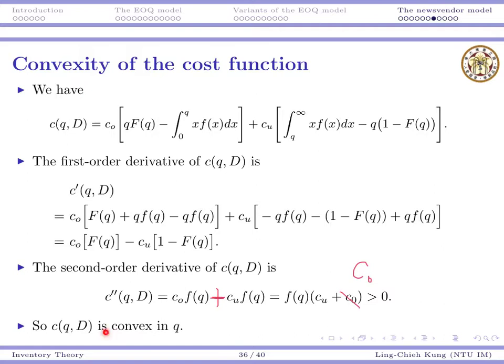Actually, this is very intuitive. When we order too few, there is a lot of underage cost. When we order too many, there is a lot of overage cost. The best thing must be at some balance point. We are not going to do extreme policies. We will try to make everything balanced.